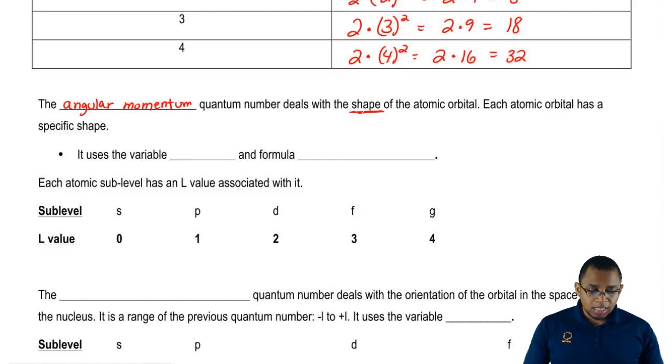We're going to say each atomic orbital has a specific shape. The variable for the angular momentum quantum number is L. It also uses the formula n minus 1. We'll see when do we use the L value, when do we use the n minus 1 value.